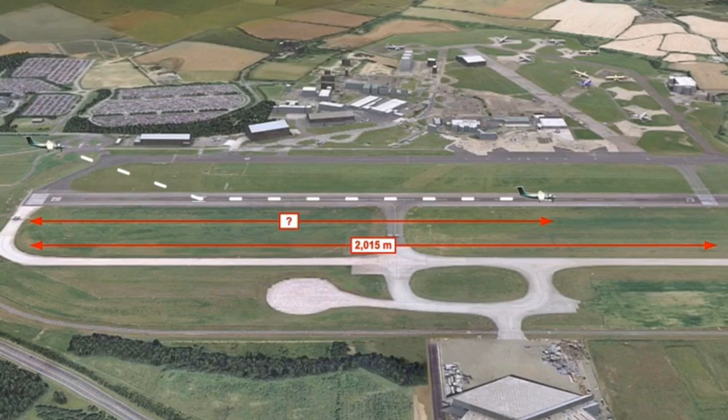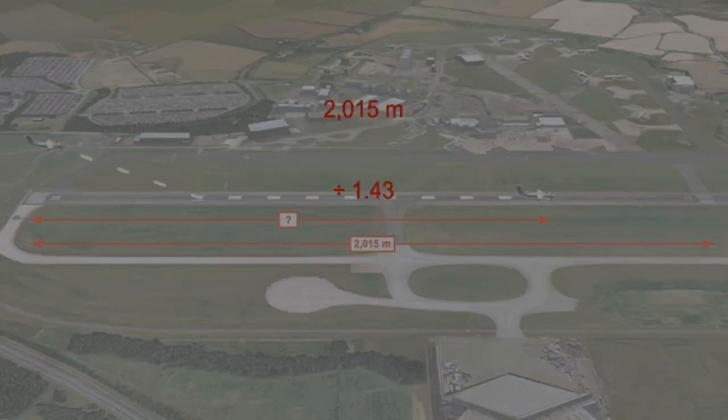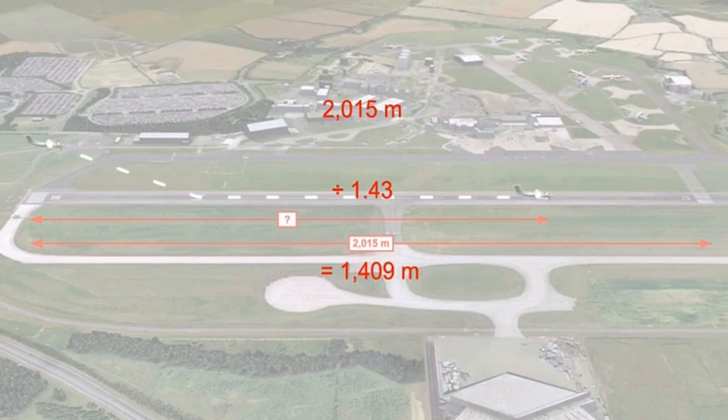Solving another way: if the available landing distance is 2015 meters, what must be the maximum allowable landing distance for a turboprop engine to comply with regulations? We find 70% of 2015 meters by dividing by 1.43, which gives 1409 meters — meaning the turboprop must come to a full stop by 1409 meters.